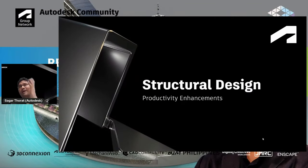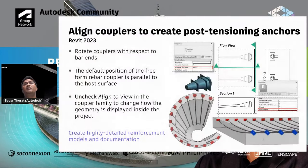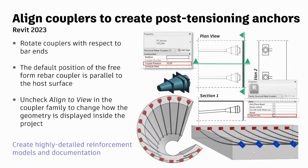Moving to design productivity features for structural engineers — structural modelers can now model their coupler geometry and align it with the rebar's end. When rotating the coupler, the default position for freeform rebar is parallel to the host surface. To create this complex geometry and display it realistically in 2D views, you can edit the coupler family and uncheck the align-to-view option. These new features help structural engineers and detailers create highly detailed reinforcement models and documentation.